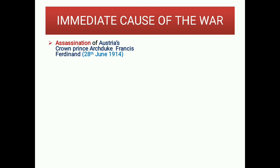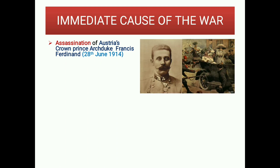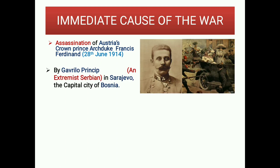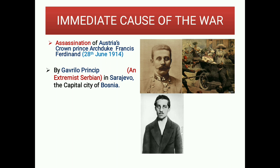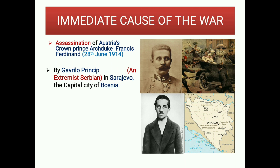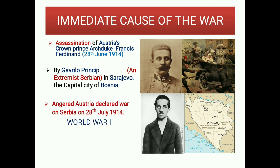Immediate cause of the war: The assassination of Austria's Crown Prince Archduke Franz Ferdinand on 28 June 1914 by Gavrilo Princip, an extremist Serbian, in Sarajevo, the capital city of Bosnia. Angered Austria declared war on Serbia on 28 July 1914, thus starting World War I.